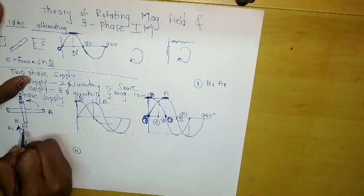Now we will see for three phase supply. In two phase there were two windings, 90 degrees apart from each other. Similarly, in three phase supply connected to three phase winding, the windings are displaced by 120 degrees apart from each other.